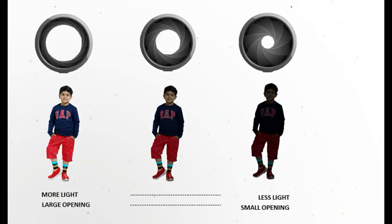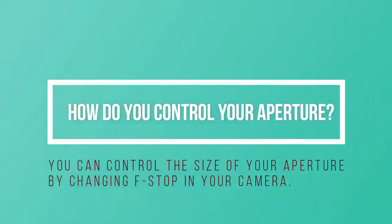Looking at this picture from left to right, you can see the size of the aperture opening is decreasing, which in turn reduces the light entering the camera. The leftmost aperture allows more light, which results in a brighter image. As we move towards the right, the light entering the camera decreases as the aperture opening goes down, resulting in a darker image. So how do you control your aperture?